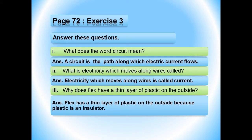On page 72, here is exercise number 3: answer these questions. Question number 1 is: what does the word circuit mean? Its answer is: circuit is the path along which electric current flows. Question number 2 is: what is electricity which moves along wires called? Its answer is: electricity which moves along wires is called current. Question number 3 is: why does flex have a thin layer of plastic on the outside? Its answer is: flex has a thin layer of plastic on the outside because plastic is an insulator.